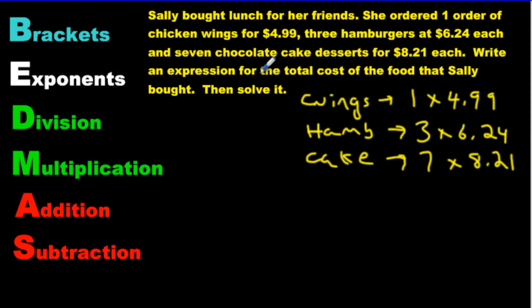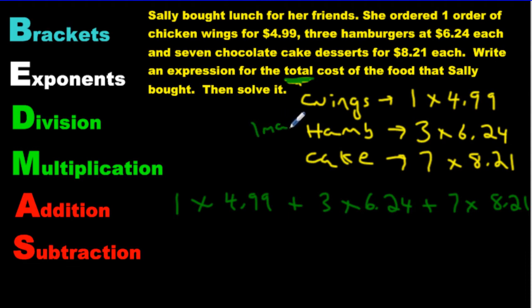Now it asks us to write an expression for the total cost. We want the total cost here. So the total cost of the food that Sally bought. The total is going to be what? What are we going to have to do with all these numbers? We're going to have to add them all up. So go ahead and write one long equation. We're going to write 1 times $4.99 plus 3 times $6.24 plus 7 times $8.21. Oh yeah, now we got this down. We got our big equation. If you got this, you can give yourself a mark. Actually, you know what? You can give yourself a mark for writing the information down and then give yourself a mark for writing your equation down.